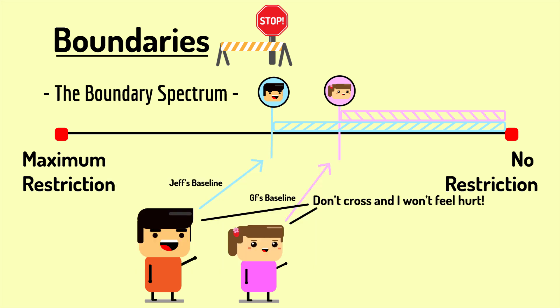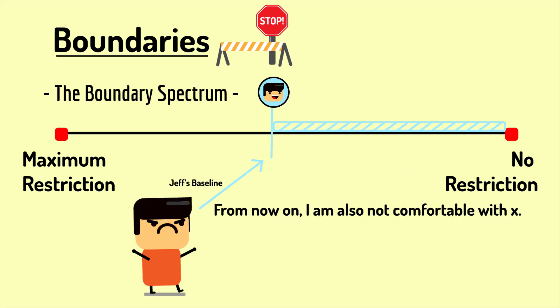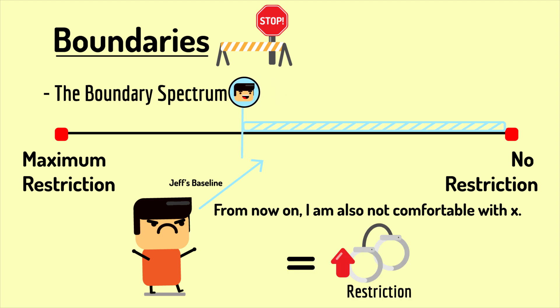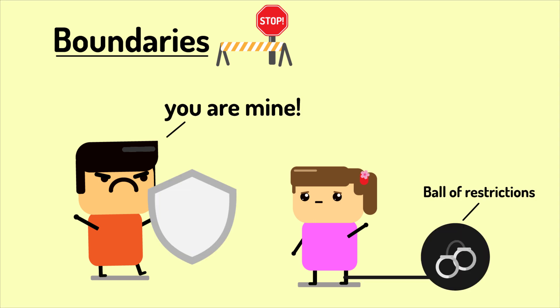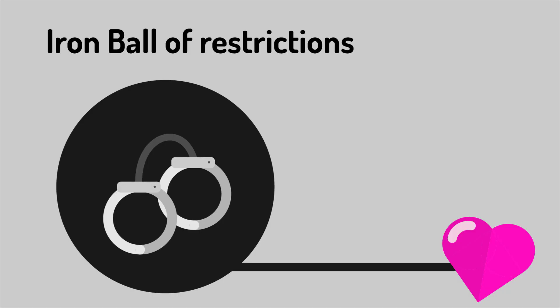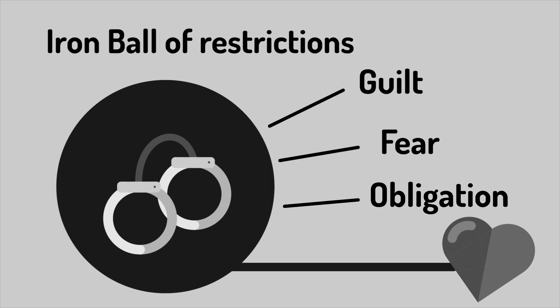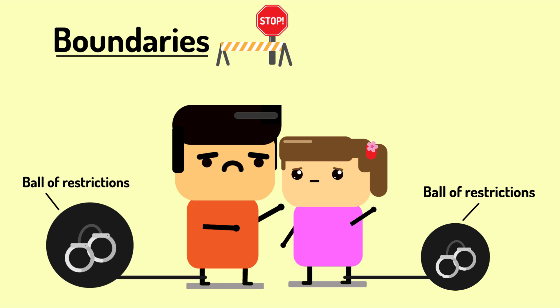I believe couples should work together on shifting the baseline towards what I call the Golden Zone — somewhere right before the extreme end of having zero restrictions. It's a very difficult thing to accomplish, because we have a natural inclination to shift boundaries the other way and become more restricting. After all, we want to guard and protect what's ours, and putting restrictions gives us comfort. However, its trade-off is actually very toxic to the relationship and prevents it from moving forward. Relationships often go down a vicious cycle of guilt, fear, and obligation, leading to inevitable downfall — especially when harmless actions are perceived as great threats. Restrictions will end up gathering resentment and poisoning the environment.